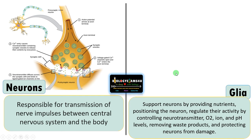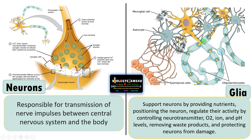In the case of glial cells, recent studies suggest that glial cells have many important functions rather than just supporting neurons. They support neurons and provide nutrients, are involved in positioning of neurons, regulate activity by controlling neurotransmitter release, control oxygen levels, ionic levels, and pH levels, remove waste products, and protect neurons from damage. So glial cells are essential for normal and proper functioning of neurons.